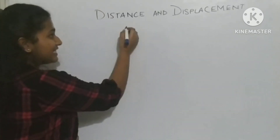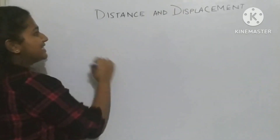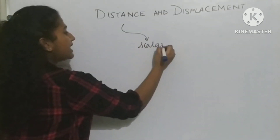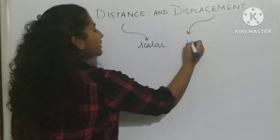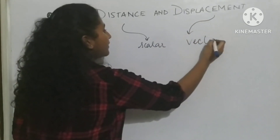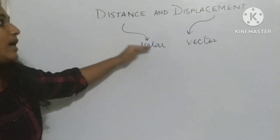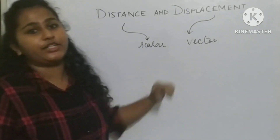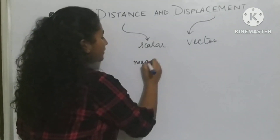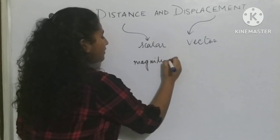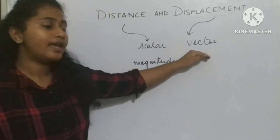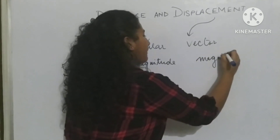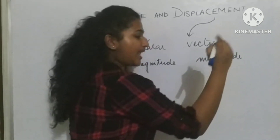The major difference between distance and displacement is that distance is a scalar quantity and displacement is a vector quantity. A scalar quantity has only magnitude, while a vector quantity has a magnitude as well as a direction.